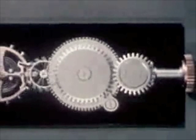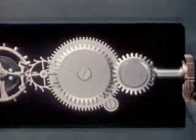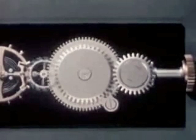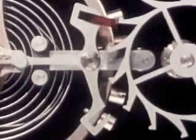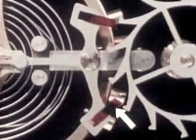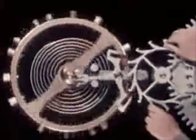What we need now is a way of holding the power in check, releasing it a little at a time just when it's needed. Another pallet jewel at the other end of the pallet cross arm will do the trick. Just as the first pallet jewel gets a push from the escape wheel, the second pallet jewel locks against another tooth of the escape wheel to hold the power of the mainspring in check.